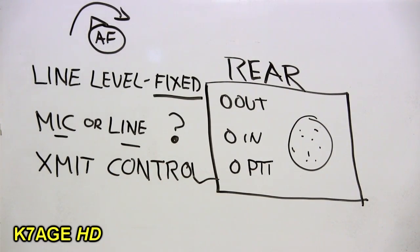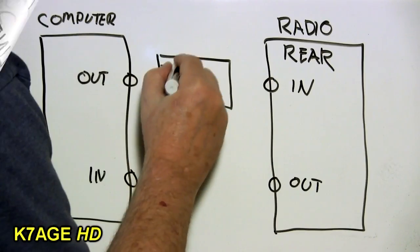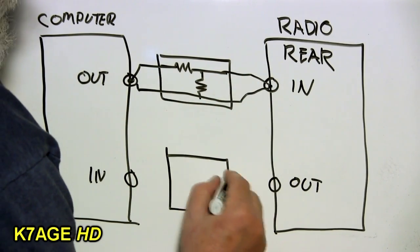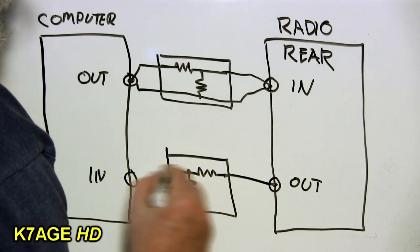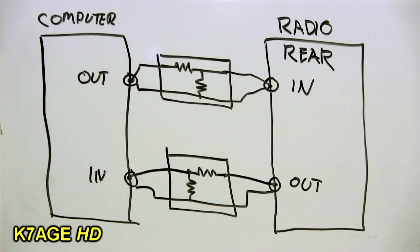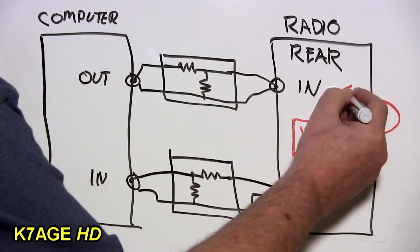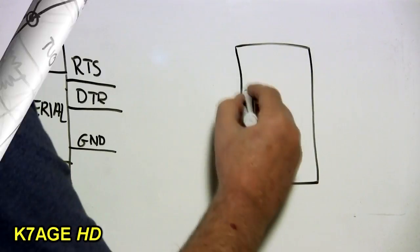So you can use the interfaces that I've shown connecting to the headphone and microphone jack to the jacks on the rear of the radio. But something to watch out for is that not all radios will allow vox to be used with audio input on the rear of the radio.